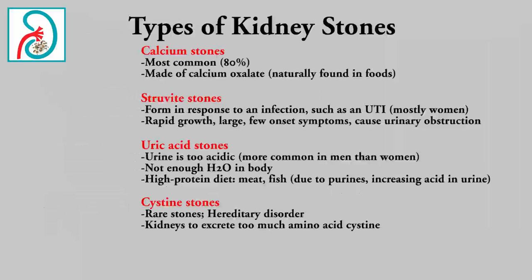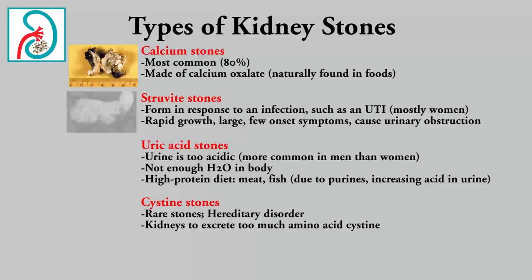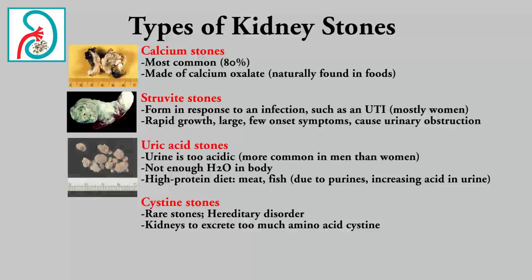There are four main types of kidney stones. Calcium stones are the most common; they're made of calcium oxalate, which is naturally found in foods. Struvite stones form in response to some infection, such as a urinary tract infection. Uric acid stones occur when the urine is too acidic, which happens when someone doesn't drink enough water or eats a high-protein diet.